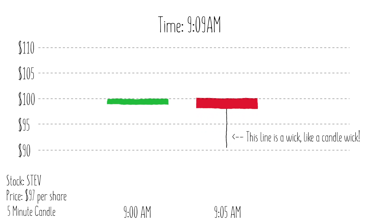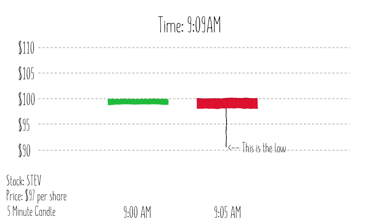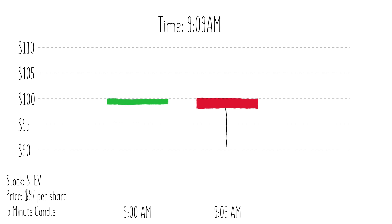At 9:09, Stev then goes back to $97. You'll see here at the bottom now a wick and the low. The wick is telling us that this stock dropped $10 in this candle's five-minute timeframe. The low is telling us that the bottom is $90 currently — it can go lower, but for now it's $90.